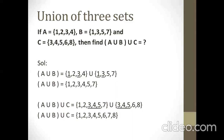Since we are finding the union, we apply the same procedure — write all elements either belonging to the first set or to the second set, but only once. So we write 1, 2, 3, 4, 5 (common to both, written once), then 6 from set C, then 7 from A union B, then 8 from set C. This is the final answer: A union B union C equals {1, 2, 3, 4, 5, 6, 7, 8}.